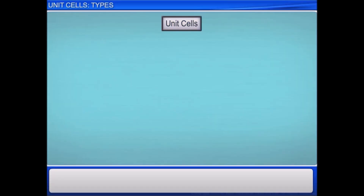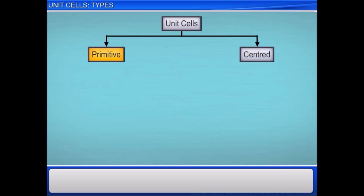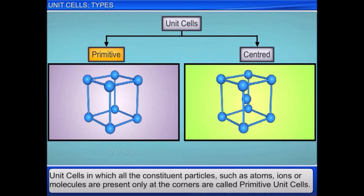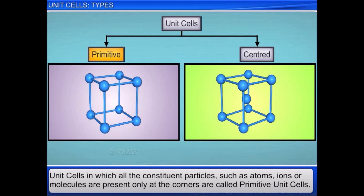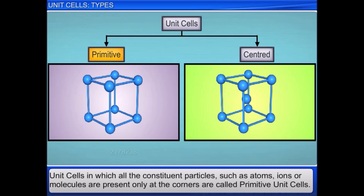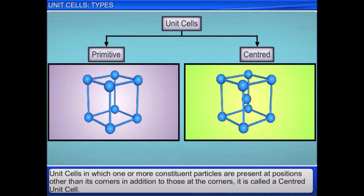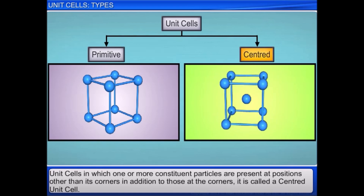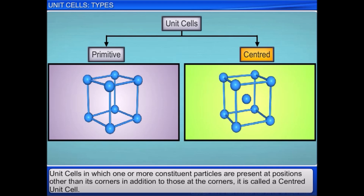Unit cells can be broadly classified into two categories: Primitive Unit Cells and Centered Unit Cells. Unit cells in which all the constituent particles such as atoms, ions or molecules are present only at the corners are called primitive unit cells. Unit cells in which one or more constituent particles are present at positions other than the corners, in addition to those at the corners, are called Centered Unit Cells.